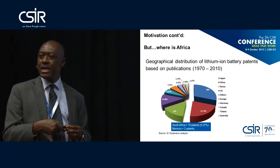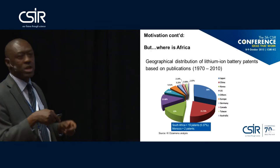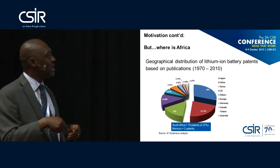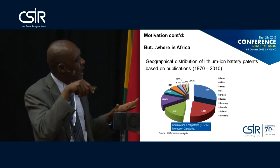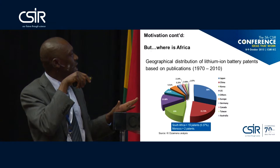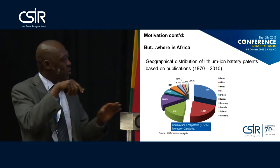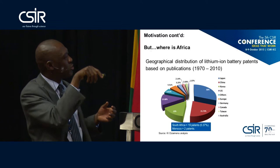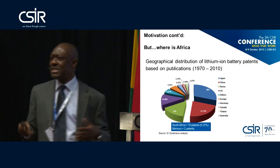Looking at the geographical distribution of lithium-ion battery patents published between 1970 and 2010, the countries that control this space are Japan, followed by China, then Korea, with 13% from the US. Africa does not even appear on the map. When I did this analysis, Morocco had only two patents and South Africa had 19 patents — so tiny that the system couldn't even plot it. It was insignificant. That is where we were.